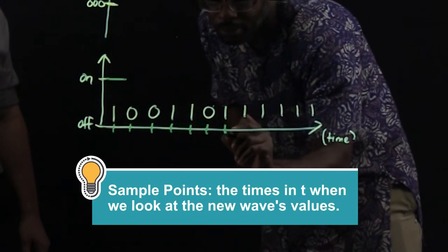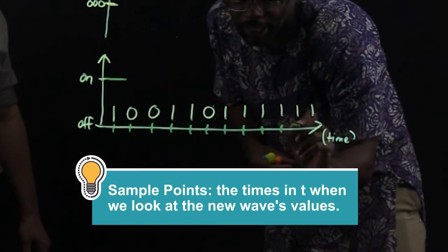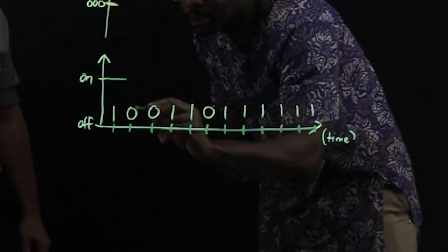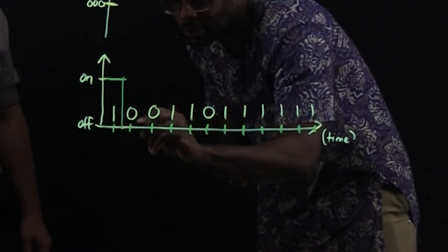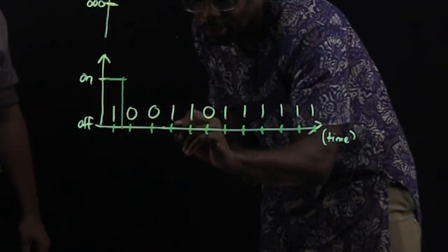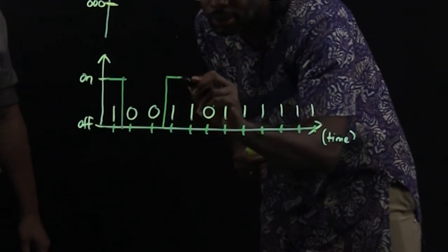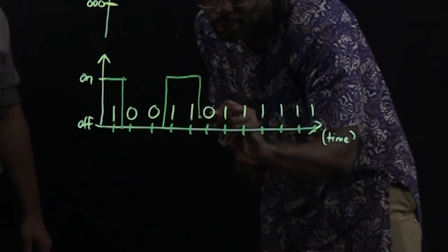and I'm just going to draw the sample points as well, just so we know where we are checking for the signal. And it turns into a zero, and we stay zero, turns into a one, we stay one, to a zero.